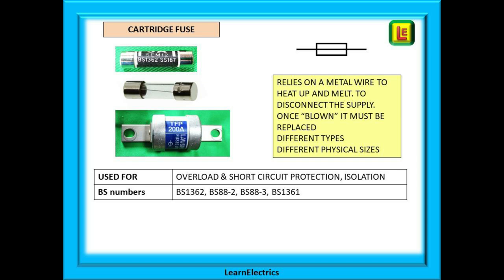Fuses come in different fusing types — some respond quickly to overcurrents, others respond a little slower, and this is achieved by mixing together different metals to make up the piece of fuse wire. There is a whole range of fusing sizes and many different physical sizes: push-in fuses, screw-in fuses, lugs with one hole, lugs with two holes, and even offset lugs. When buying fuses, take the old one with you to the wholesalers to make sure you buy the correct one.